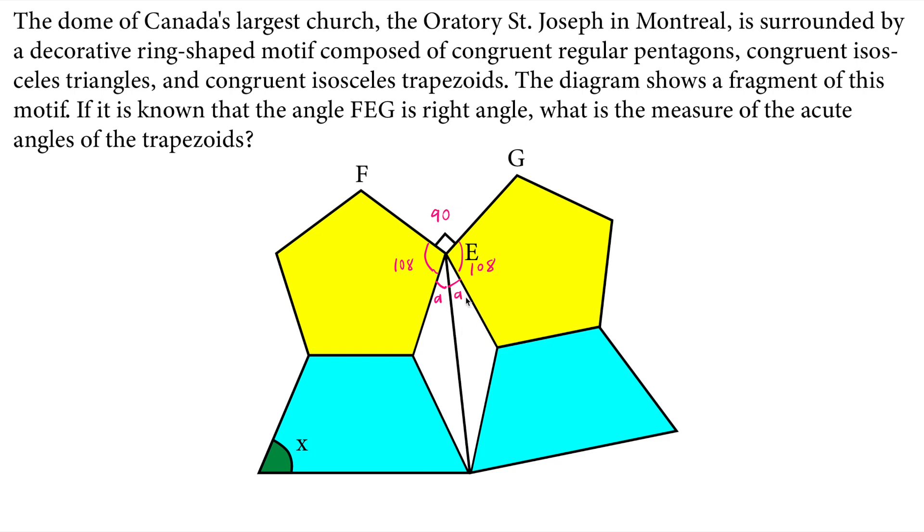These are isosceles triangles and they are congruent. Therefore, these side lengths are all equal. And I see that we can find A because if I draw a circle around these angles, the sum of these angles should equal 360. So 90 plus 108 plus 108 plus 2A equals 360.